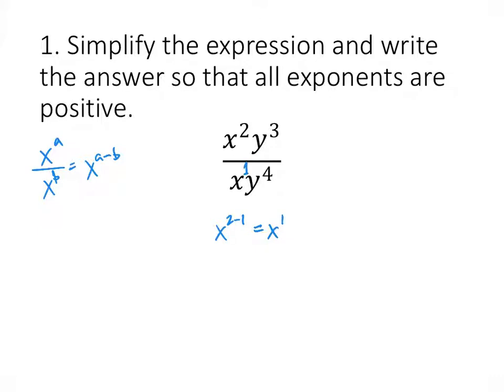And then we have y cubed divided by y to the fourth, so that gives us y to the 3 minus 4, which is y to the negative 1. So we could write our answer as x times y to the negative 1, except that we have to write our answer so that all exponents are positive.